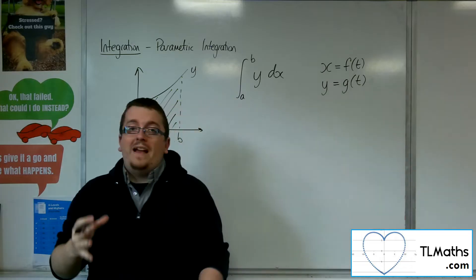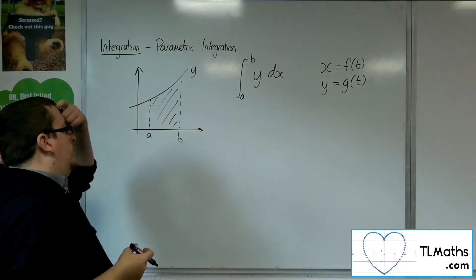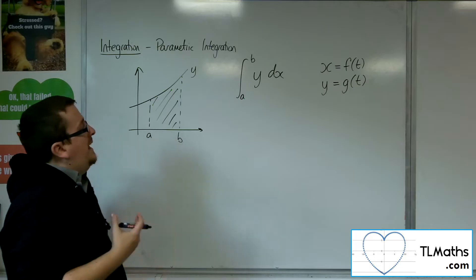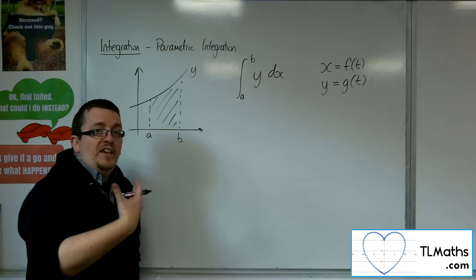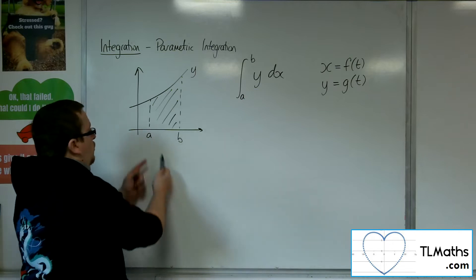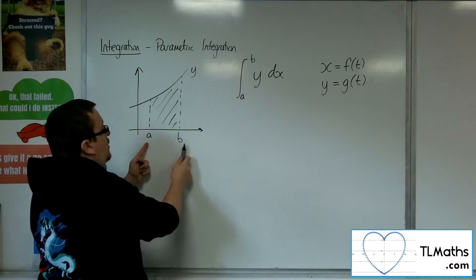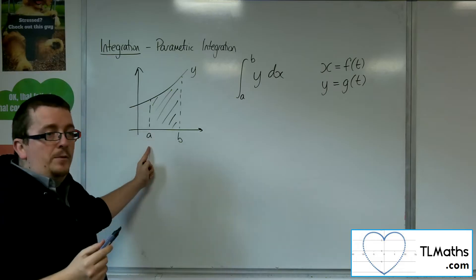Okay, what if that is the case? Well, it is clear that what we can do is we can find t values that will give us the correct coordinates for a and b.